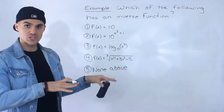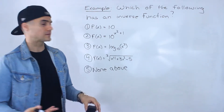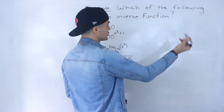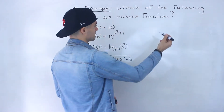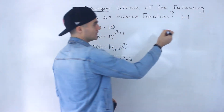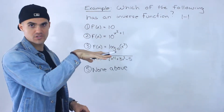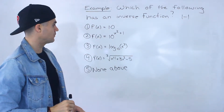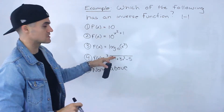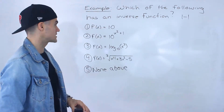For a function to have an inverse function, if you remember from the lecture videos, the original function has to be one-to-one, or it has to pass the horizontal line test. So we can go through each of these and see which one passes the horizontal line test and which one doesn't.